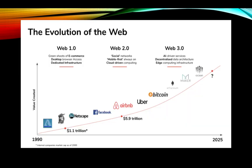Looking at the diagram of the evolution of the web: Web 1.0 features e-commerce, desktop, and dedicated infrastructure. Web 2.0 features social networks, mobile-first (websites are responsive and accessible from phones), and always-on connectivity. Web 3.0 features AI-driven services, decentralized data architecture, cloud-driven computing, and edge computing infrastructure — from 1990 to now.